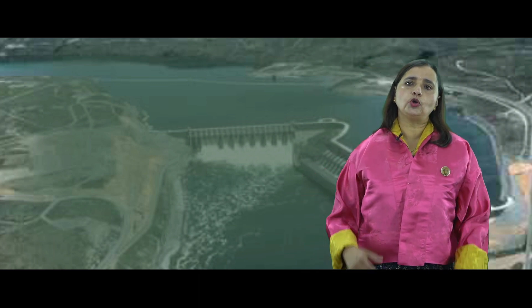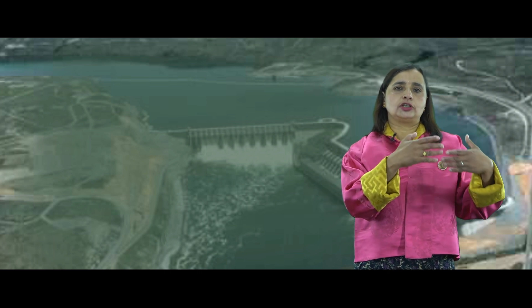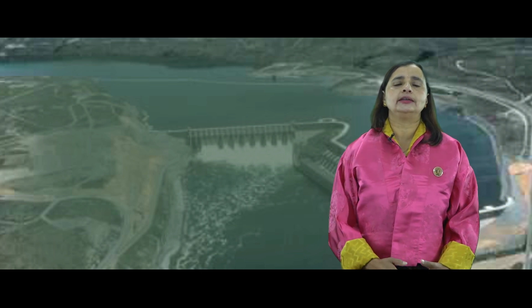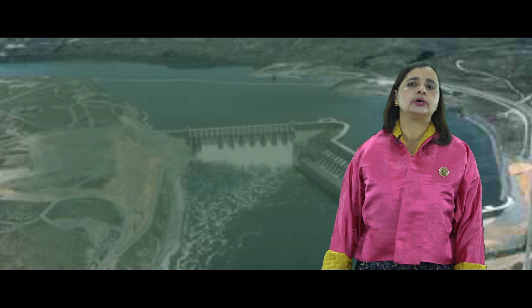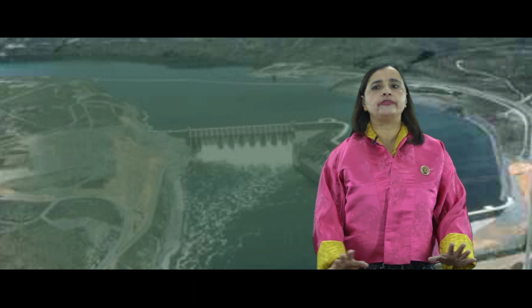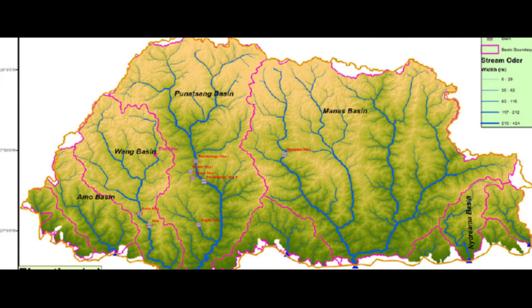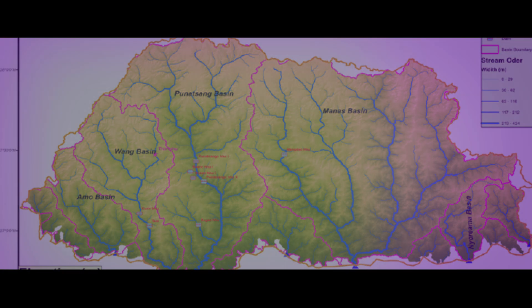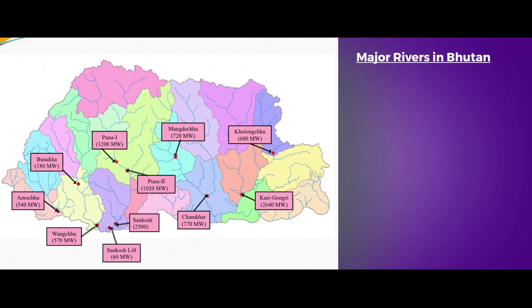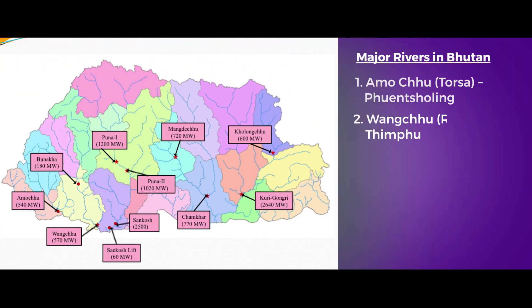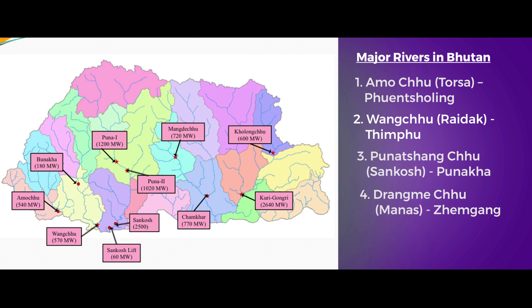Before we go into hydroelectric power plants in detail, it is important to remember the major rivers of Bhutan. We have five major rivers: Amachu, Wongchu, Punachalchu, Drangmichu, and Badachu.